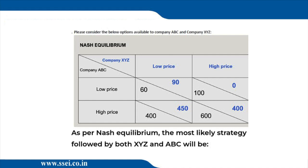Case one: suppose ABC will charge a low price — look at the first row. If ABC charges a low price, then look at the two blue profits for XYZ: the profits are 90 or 0. Which one is higher? 90. That means if ABC is going to charge a low price, XYZ should definitely charge a low price. Low price is locked in for XYZ.